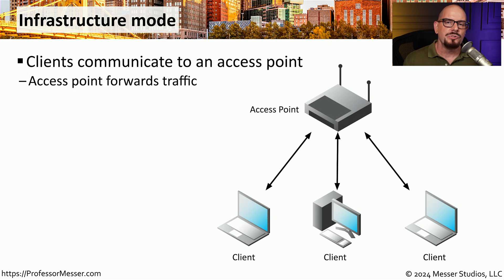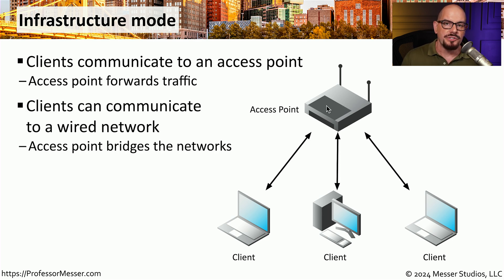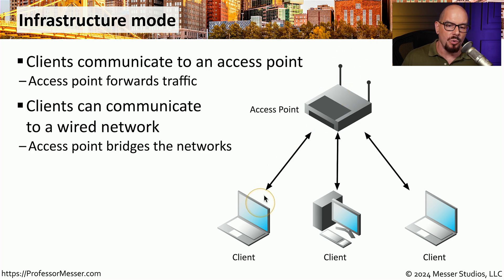Perhaps the most common way to connect to a wireless network is infrastructure mode. This is where you have a centralized access point — the type of wireless networking you're likely using at home and in your office. All wireless devices connect to that central access point, and you're able to communicate out to the wired network or between other wireless devices over that same access point.